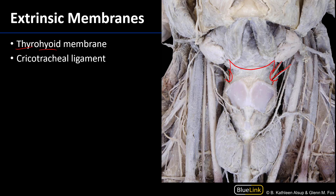Also an extrinsic ligament, though we can't see it very well here, is the cricotracheal ligament. If the thyrohyoid membrane suspends the larynx, the cricotracheal ligament is going to suspend the trachea from the larynx, and we'll see this in a better view elsewhere.